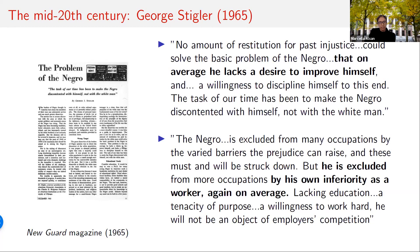Stigler further argued that 'the Negro is excluded from more occupations by his own inferiority as a worker, again, on average.' He went on to argue that many whites do not want Black neighbors not because they are prejudiced, but because Black Americans, on average, are bad neighbors — 'a loose, morally lax group.' In short, the principal driver of racial disparities according to Stigler was that Black Americans' exogenous preferences drove group differences — a word he used four times in this short essay.